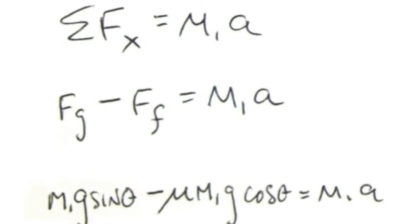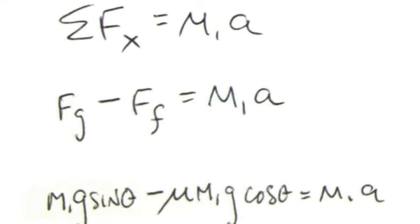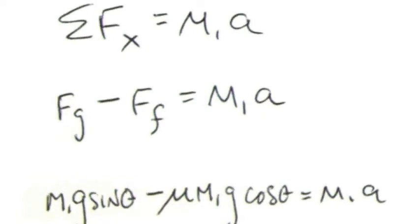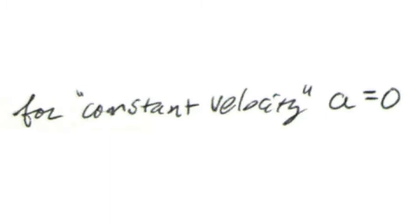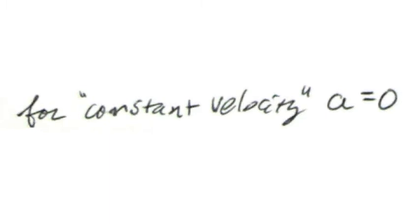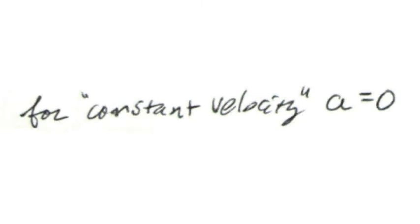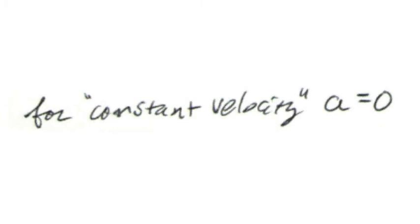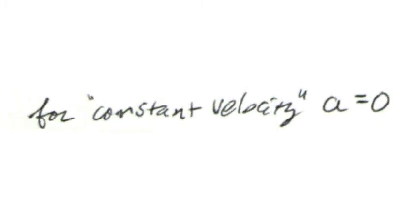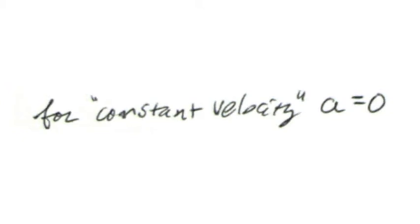You might very well have motion, but if the mass is moving at a constant velocity, remember that means there's no change in velocity, so acceleration is zero. That means your forces due to gravity and friction are balanced, and you can solve your problem accordingly.